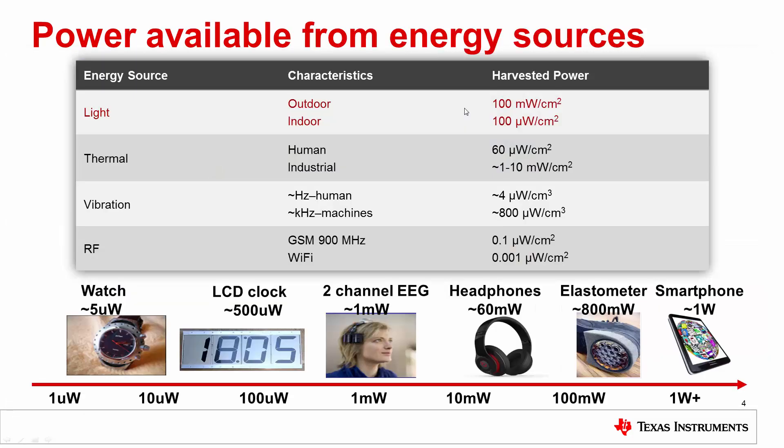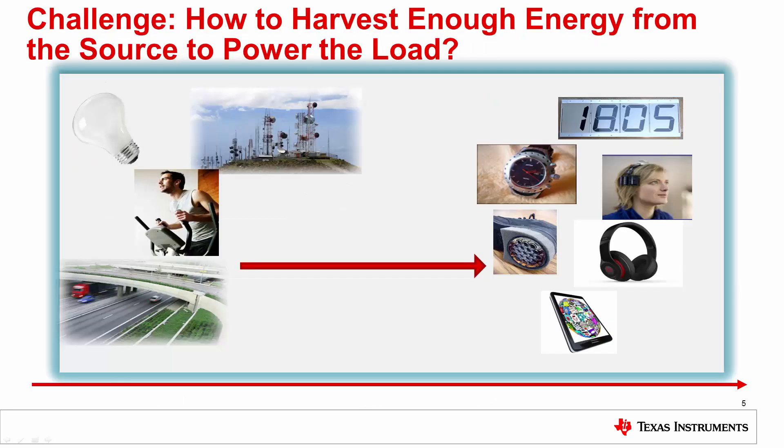This table shows the approximate output power of various sources such as light, thermal, vibration, and RF energy. As we can see, light produces by far the most power per unit area. This is probably one reason why it's the most common energy harvesting source in the market today. On the bottom is also shown the typical average power consumptions of various devices. As we can see, there is still quite a bit of gap on the higher power devices to the amount of power output possible from the harvesters. So this becomes our challenge to solve. How can we harvest enough energy from a particular source to power a particular load?